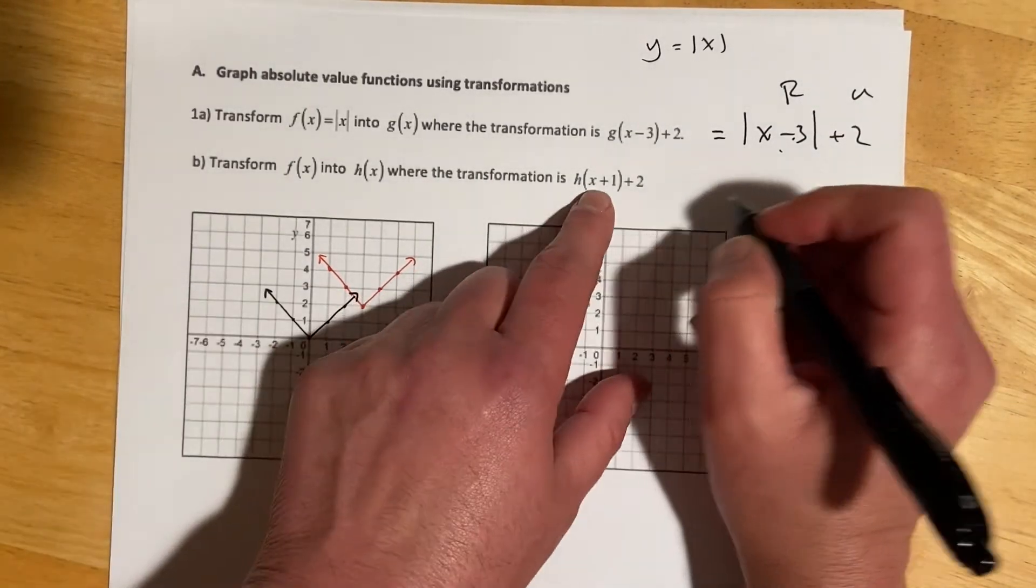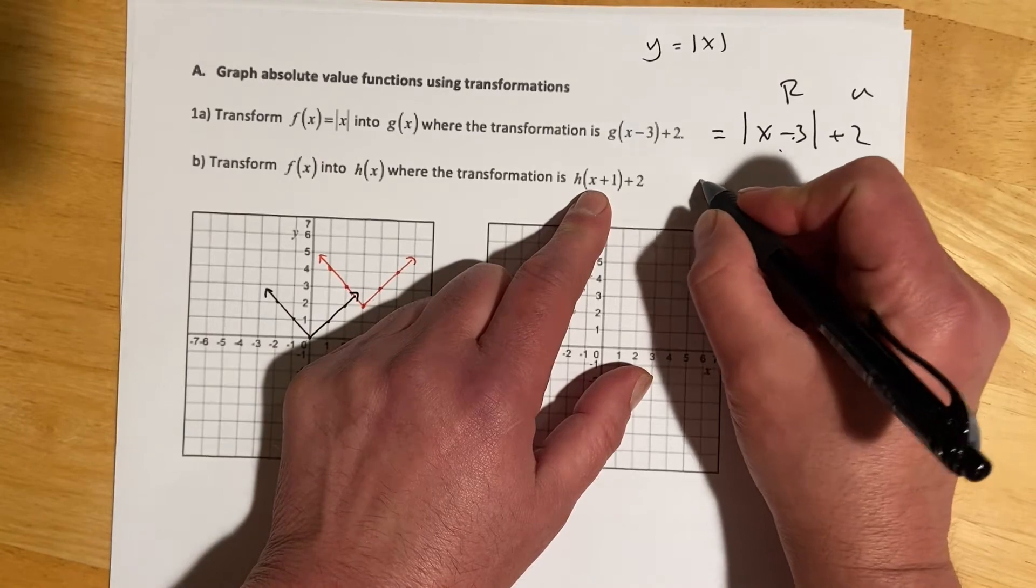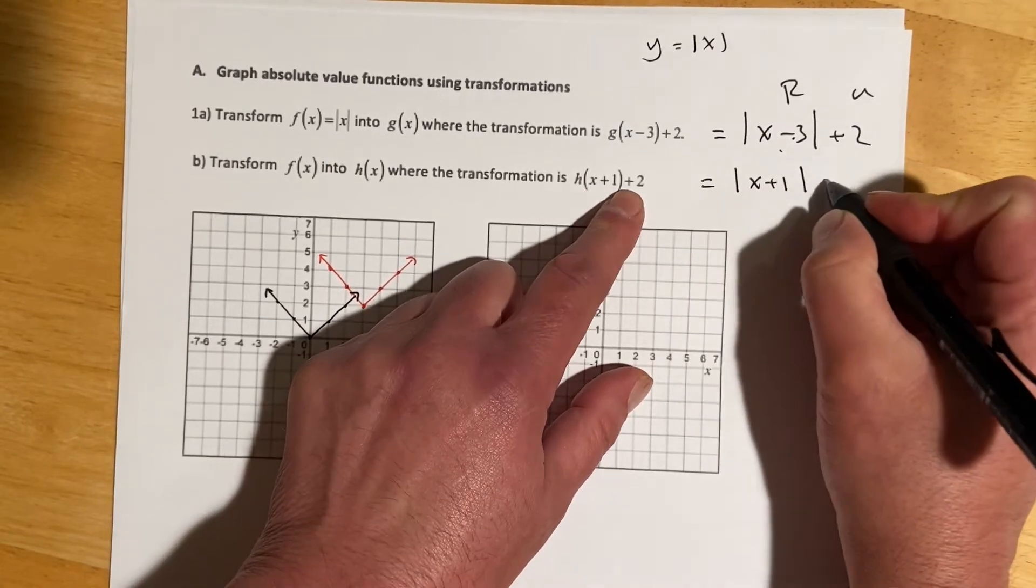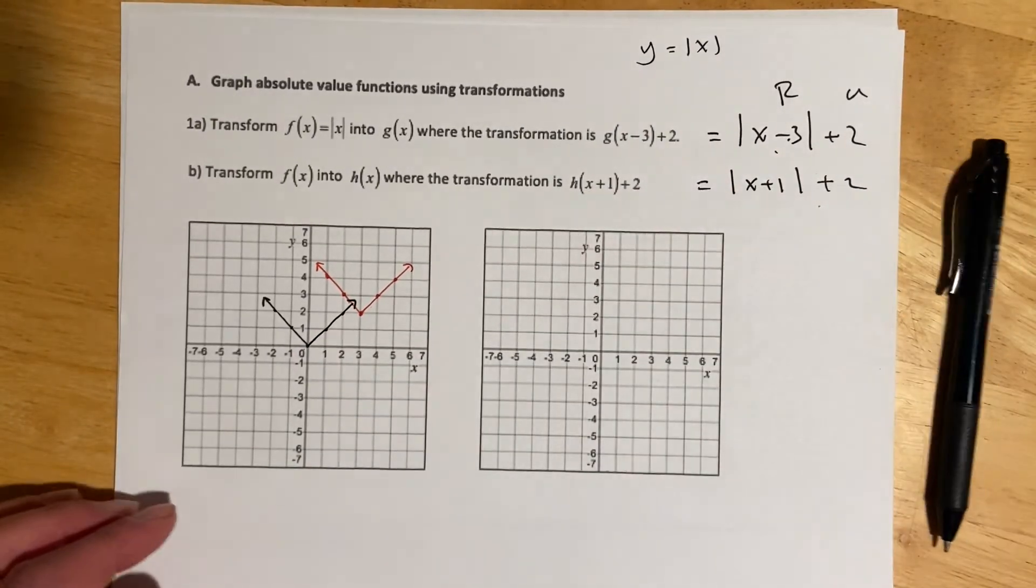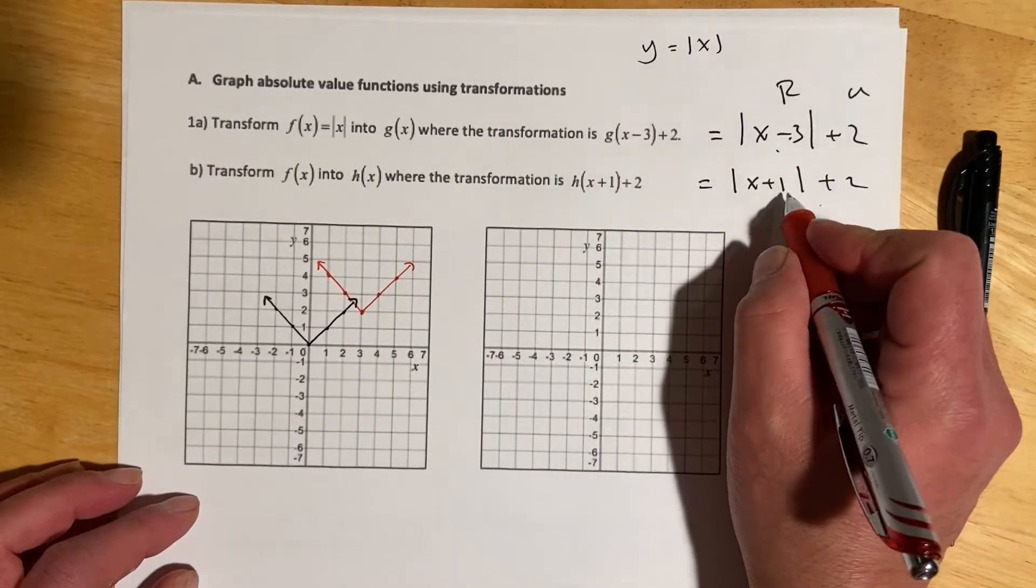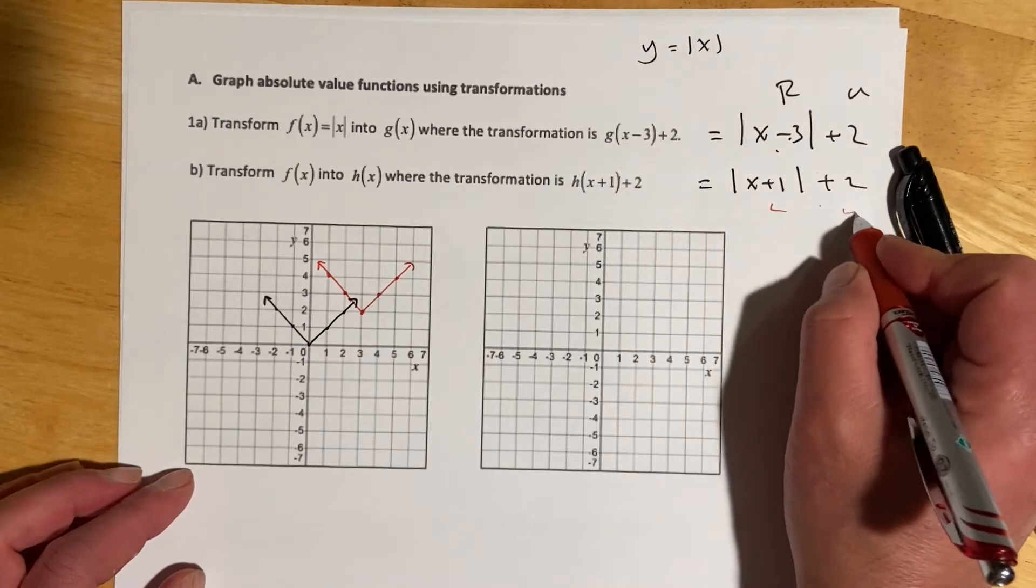For this one, we have plus 1 on the inside, so that's x plus 1 and then plus 2. This is going to go left 1 and then up 2 again.